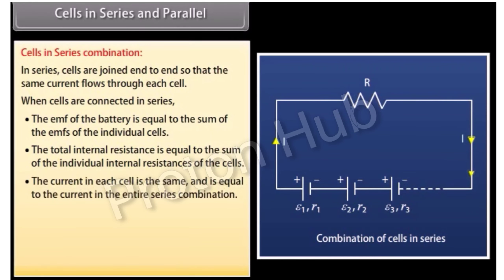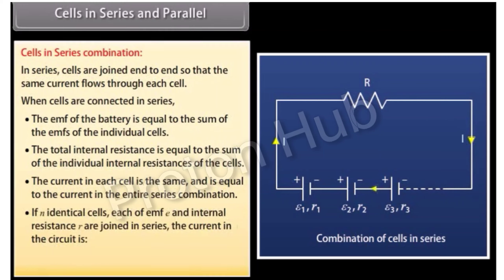The current in each cell is the same as the current in the entire series combination. If N identical cells, each of EMF E and internal resistance r, are joined in series, the current in the circuit equals NE divided by (R + Nr).